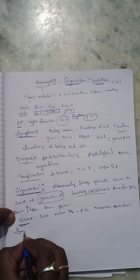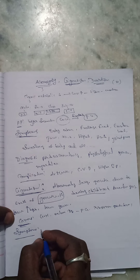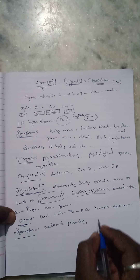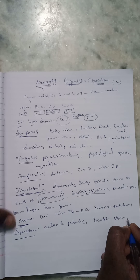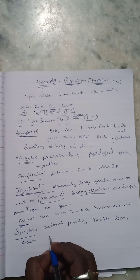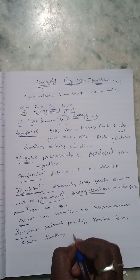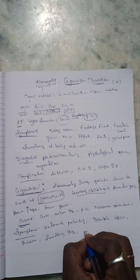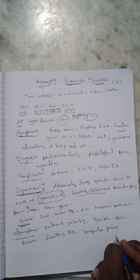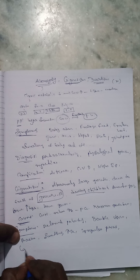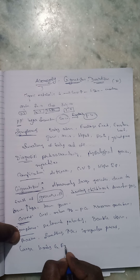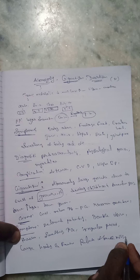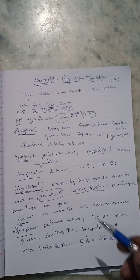What are the symptoms of gigantism? The symptoms include delayed puberty, double vision, headache, increased sweating, irregular periods or menstruation, large hands and feet, and releasing of breast milk, among others.